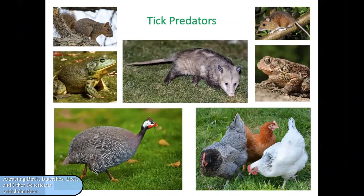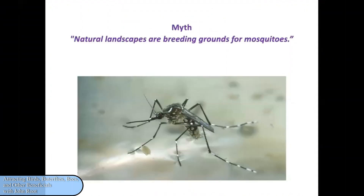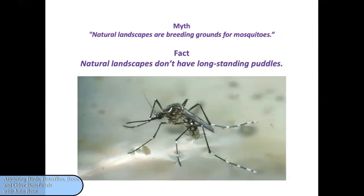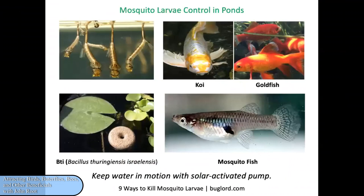Consider also that if you have a natural landscaping, a variety of our native animals — including amphibians, the guinea hen, and the opossum — are eager to help themselves to those ticks and help to control their populations. Mosquitoes are another concern, but consider that lawns are more likely to have standing puddles than native plantings. If you do decide to have a pond, which is a great way to attract wildlife, consider that mosquito larvae are able to live in stagnant water. If you install a solar-activated pump and keep the water in motion, that will take care of the mosquito problem. You can also stock ponds with koi, goldfish, or mosquito fish to control their populations.